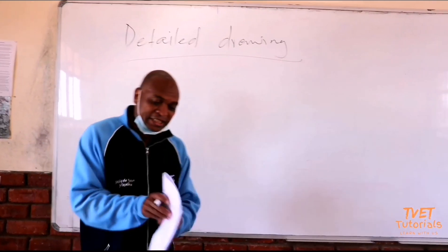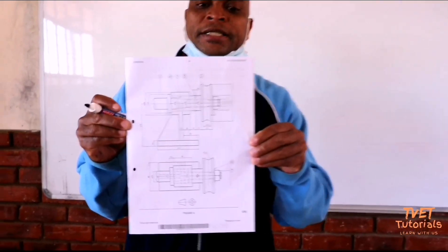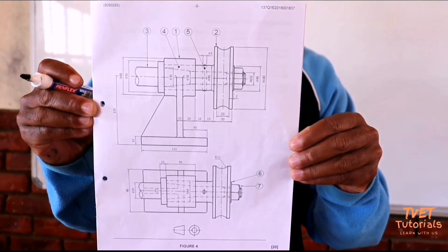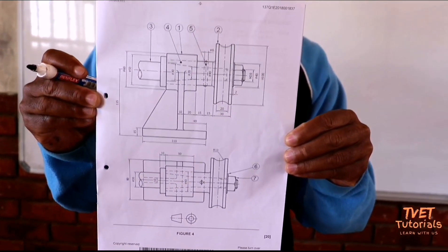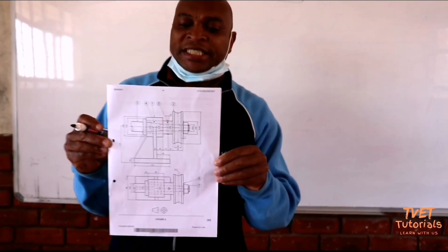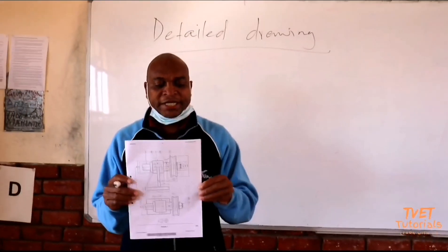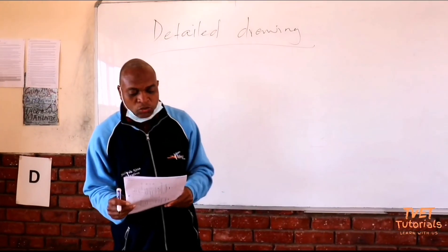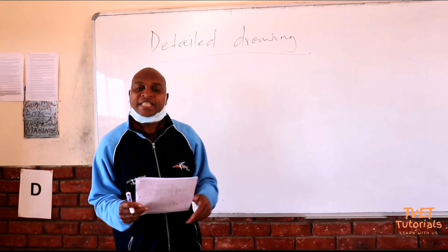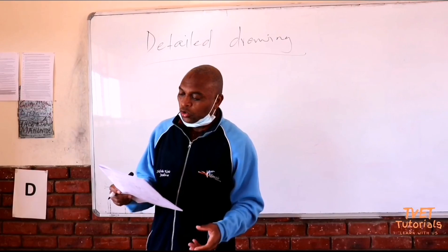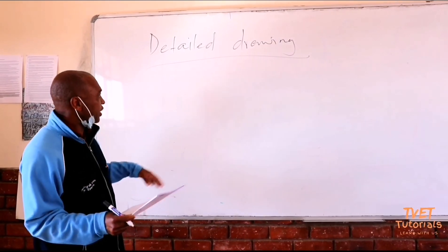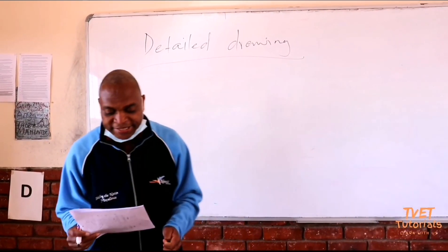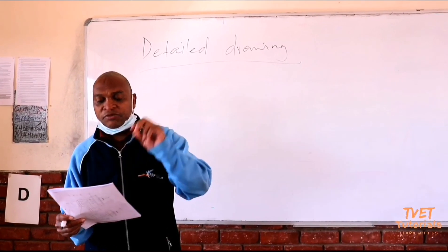Here I have a sketch — figure four — which shows two primary views of a pulley assembly. We are going to draw to scale 1:1 a detailed drawing of the following components. According to the question, we are going to draw the shaft support, which is item number one, showing a full sectional front view and a top view in first angle orthographic projection.